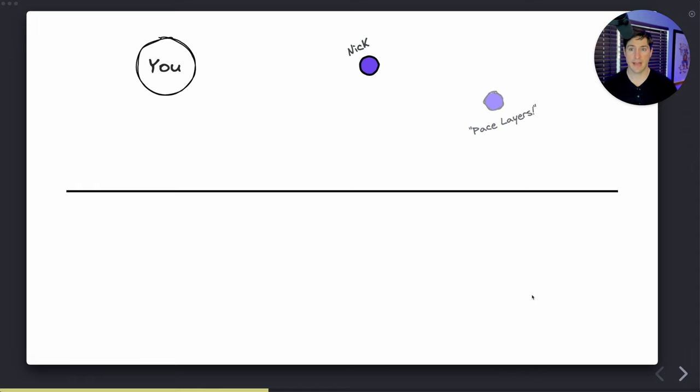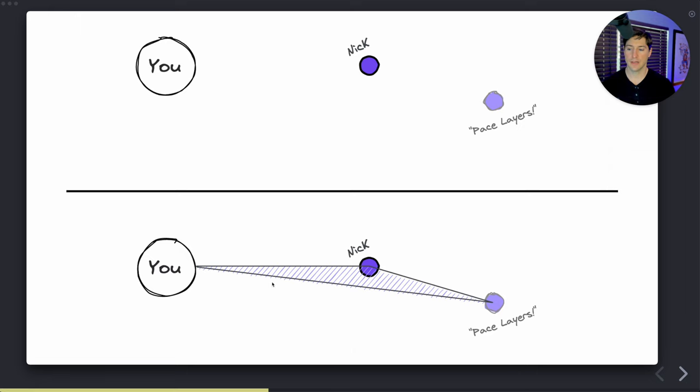However, as you become more comfortable with me, I become more clear to you and closer to your level of understanding of what I'm all about, and you also start to understand pace layers a little bit. So now what are we getting? We're getting some sort of triangle forming where we can use what we know about Nick to inform what we know about pace layers.